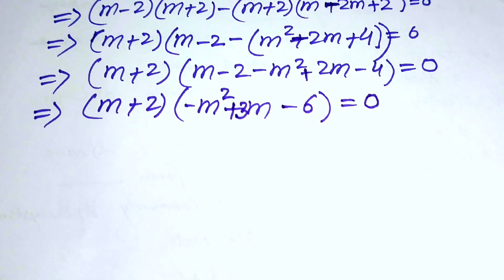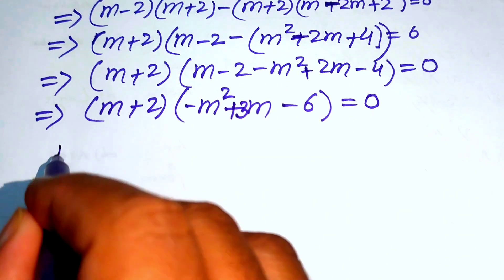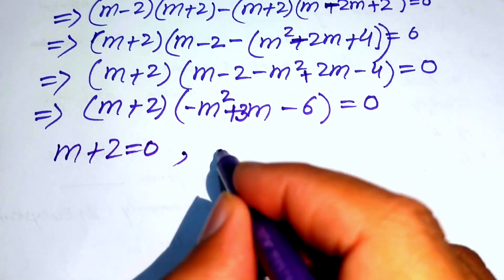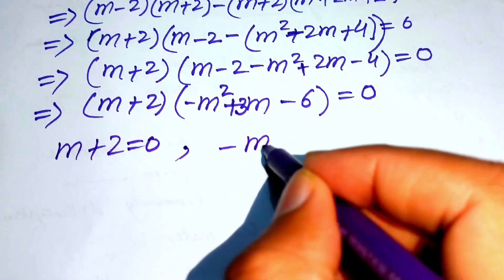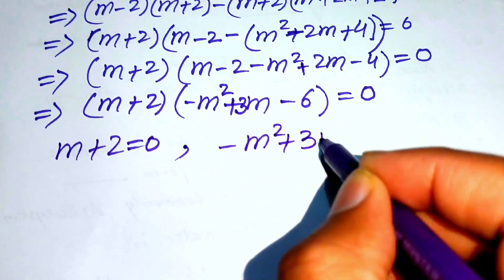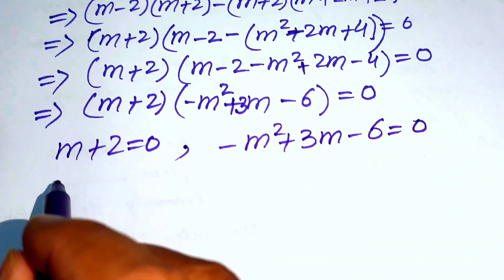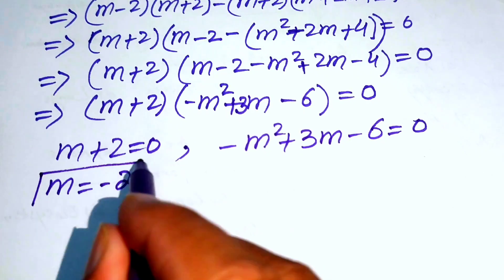We split into two cases: Case 1 is m plus 2 equals 0, and Case 2 is minus m squared plus 3m minus 6 equals 0. From Case 1, we immediately get m equals minus 2, which is our first real solution.